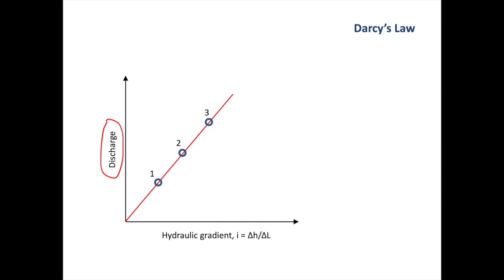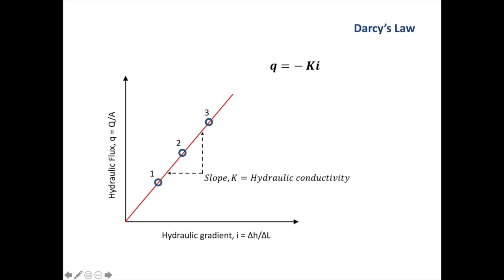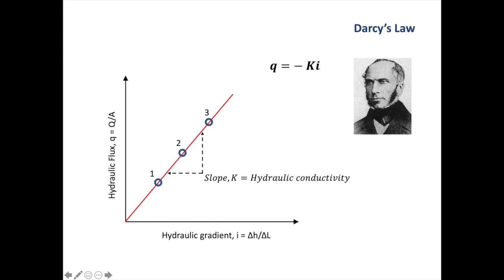In our previous permeability experiment, we were plotting discharge against hydraulic gradient. We can also plot the hydraulic flux against hydraulic gradient, and we'll get a similar straight-line relationship. The slope of this relationship is the hydraulic conductivity of the material, usually expressed as capital K, and it has units of length over time — for example, meters per day. The relationship is expressed as the hydraulic flux q equals minus Ki, where K is the hydraulic conductivity and i is the hydraulic gradient. This is also known as Darcy's law of 1856. Henri Darcy was the first person to look at flow in porous media, and he worked in Dijon, France.